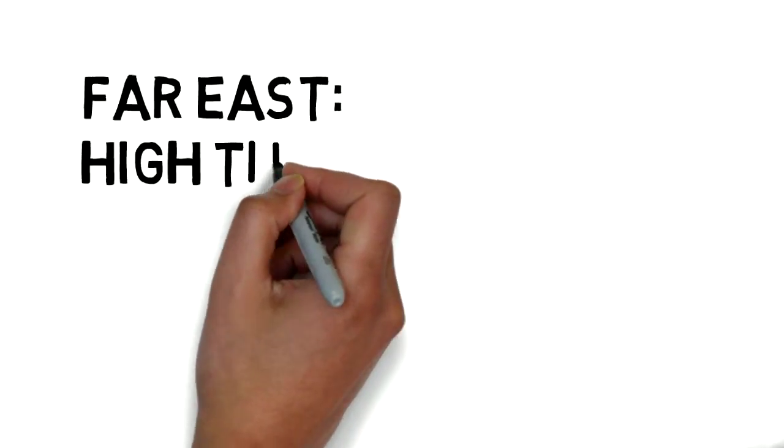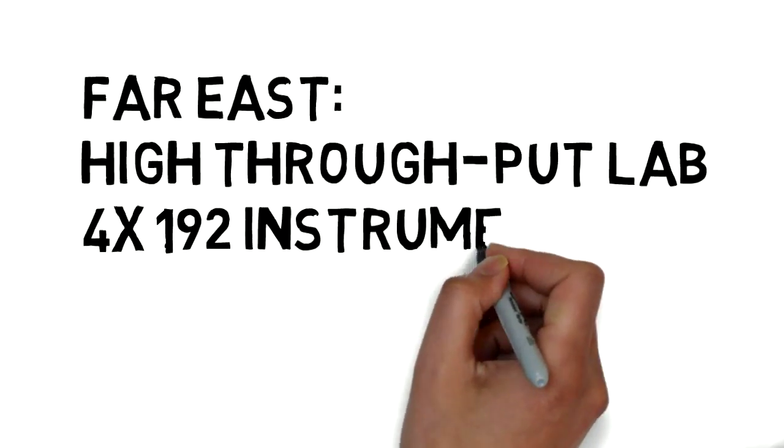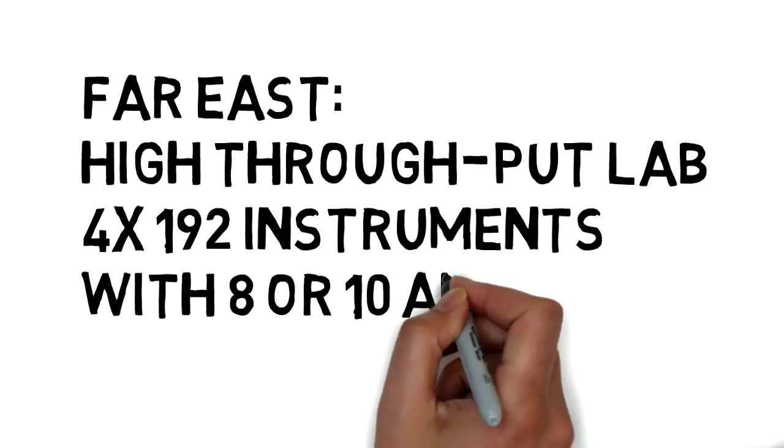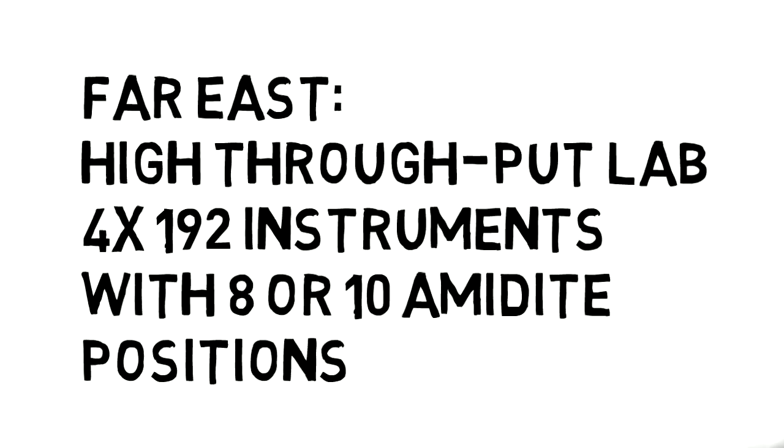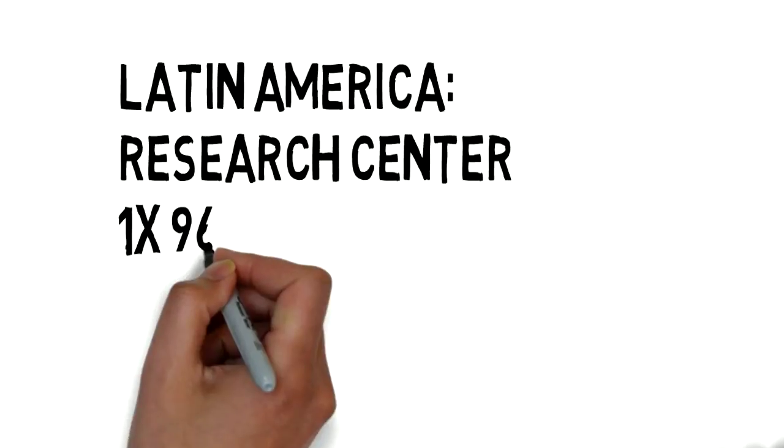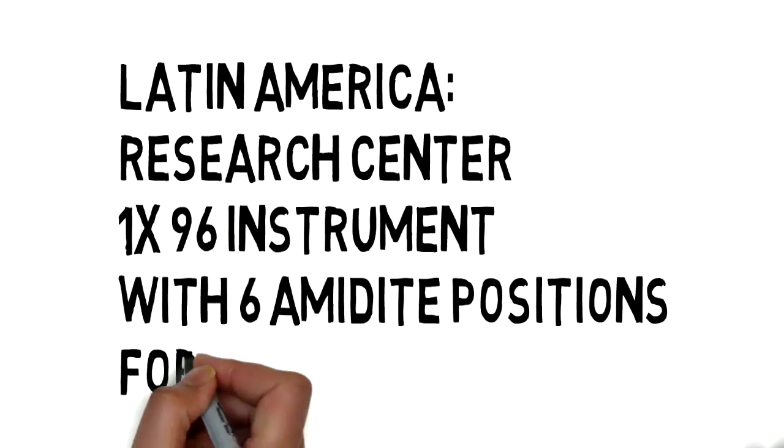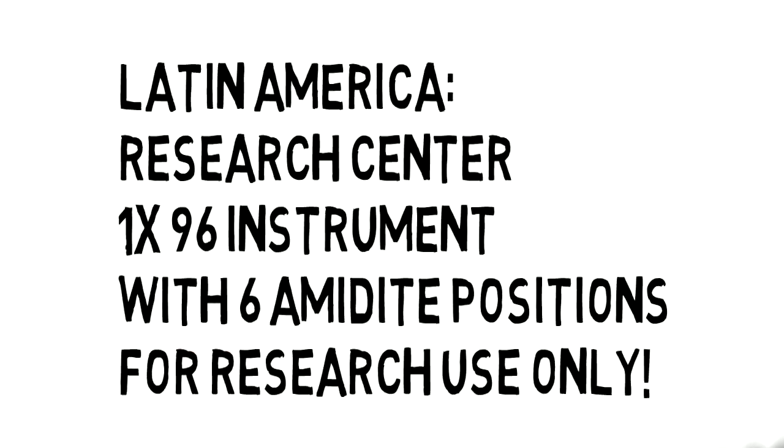The first one is from the Far East High-Throughput Lab. They have 4 192-channel instruments with 8 or 10 amidite positions. Another example is from South America. A research center has 1 96-channel instrument with 6 amidite positions for research users only.